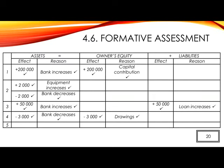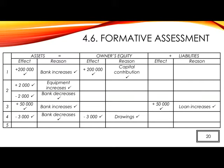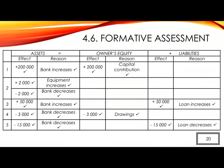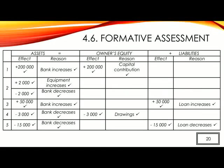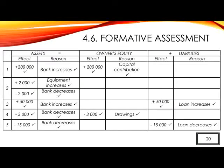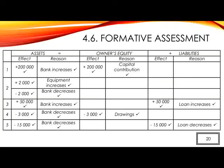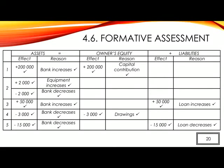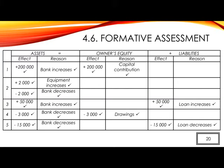Number 5. Repaid 15,000 Rand of the loan. The two accounts involved are Bank, which is an asset, and Loan, which is a liability. In Assets, show minus 15,000 — tick — because Bank decreases — tick. And in Liabilities, minus 15,000 — tick — because Loan decreases — tick. Add up your mark to give yourself a total out of 20.